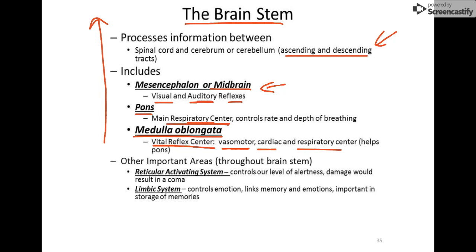There are other important areas distributed throughout the brainstem. The reticular activating center controls your level of alertness — how aware of the world you are. When you're sleeping, that area shuts down; when you're awake, it's far more active. The limbic system consists of emotional areas throughout the brainstem that tie your emotions to memories and similar functions — we think of it as the emotional part of our brain.